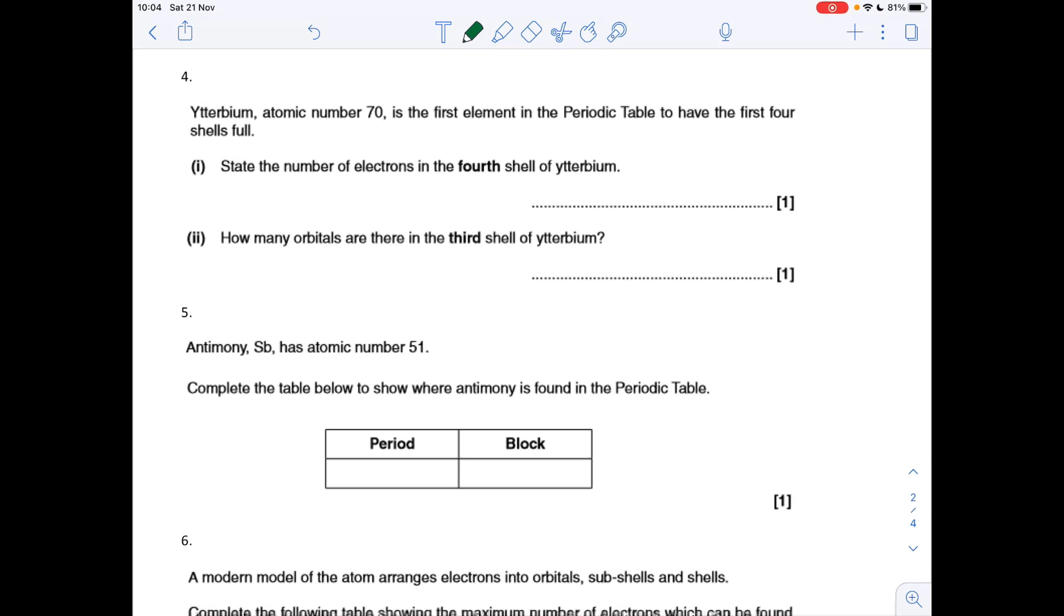How many electrons would there be in the fourth shell of a terbium? It's obviously going to be full, so the answer is 32. They're basically just asking you how many electrons can you fit in the fourth shell.